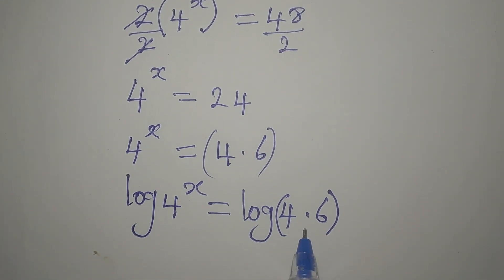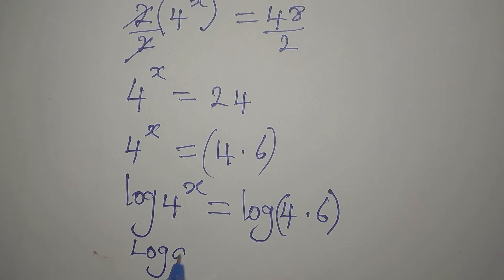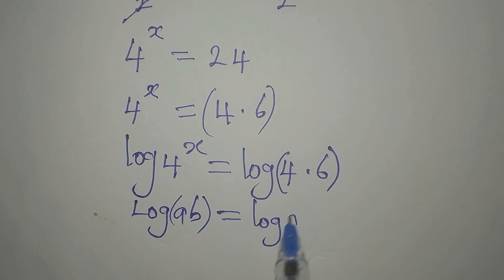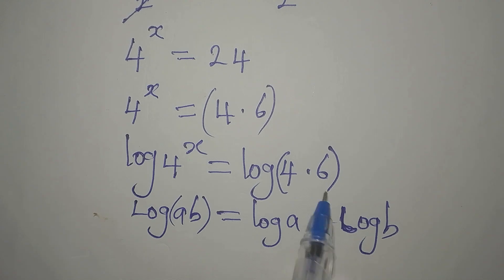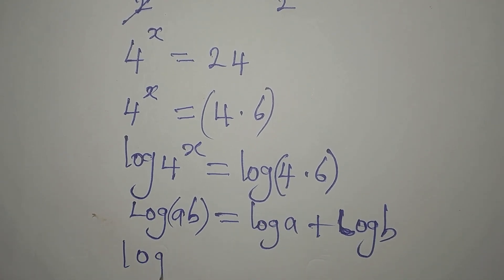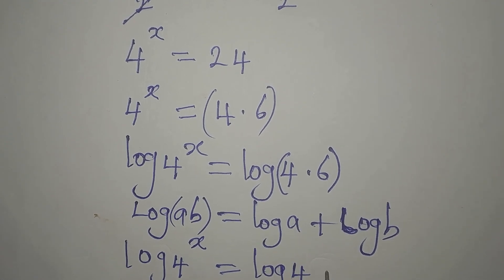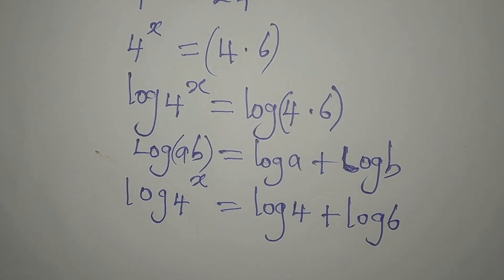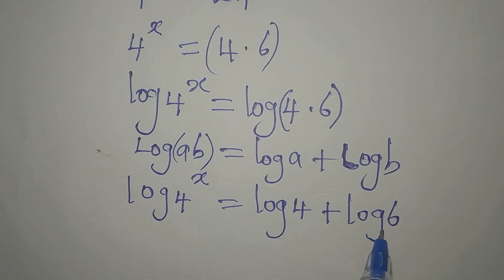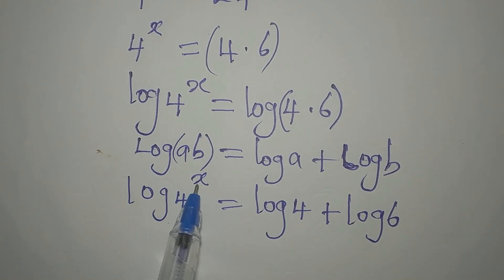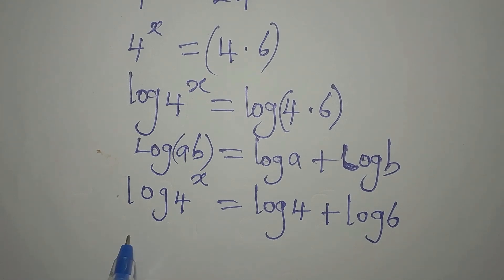We're going to apply the log product law here: log of a times b is the same as log a plus log b. Applying this, we have log of 4 to the power of x equals log 4 plus log 6. Remember that all of these are in base 10. Then by the power rule, the exponent x comes down in front, giving us x times log 4.